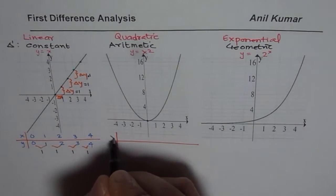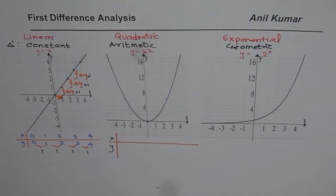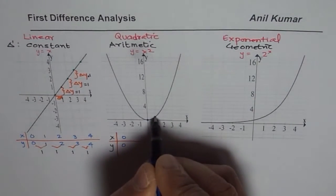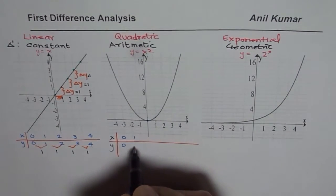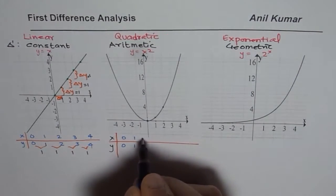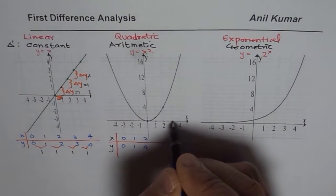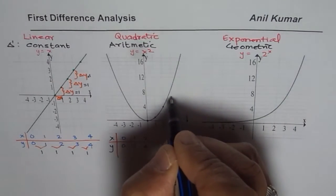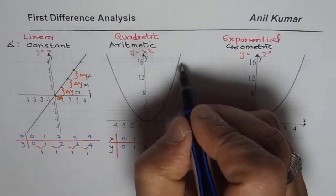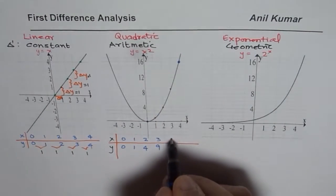So let me write down the values for x and y. In this case for 0, the value 0 for y. In case of 1, it is 1, 1 squared. For 2, it is 4, 2 squared. For 3, it is 9. For 4, it will be 16. So that is the point which is 16.